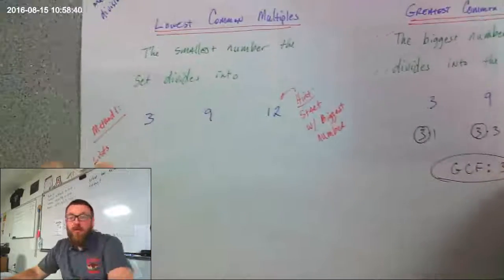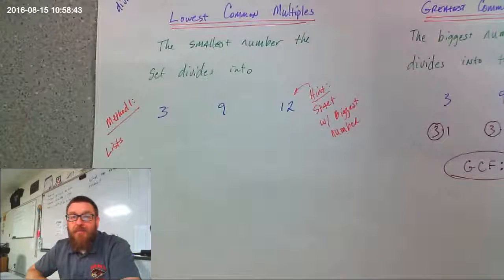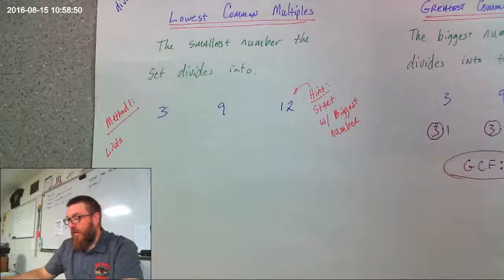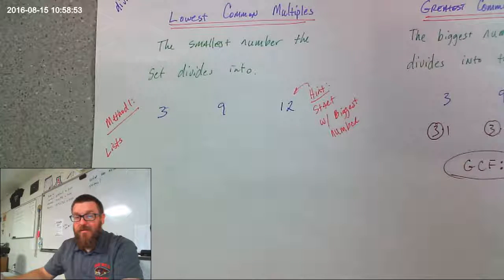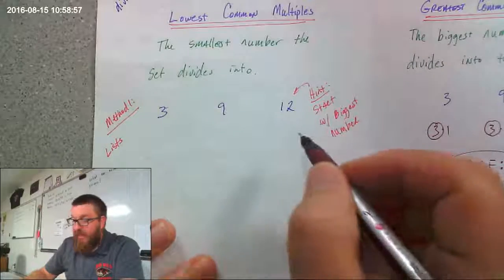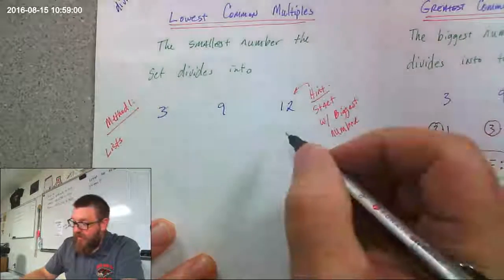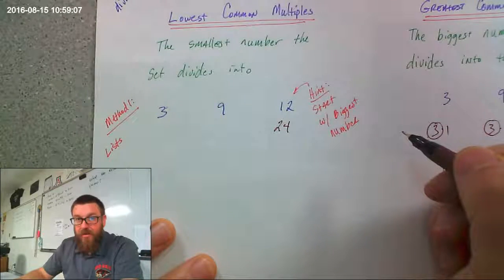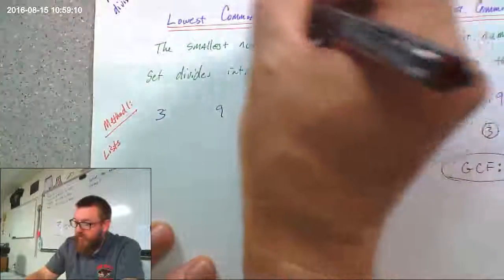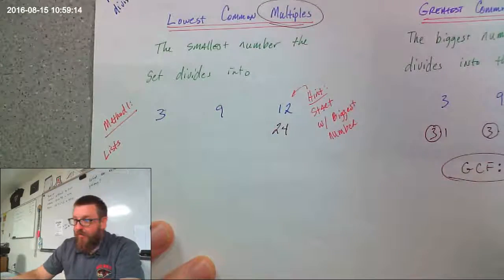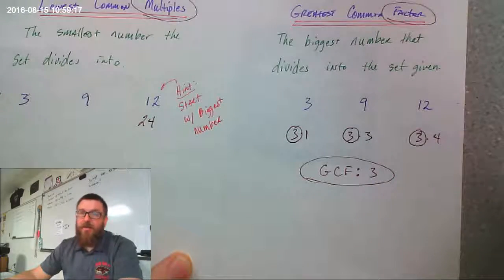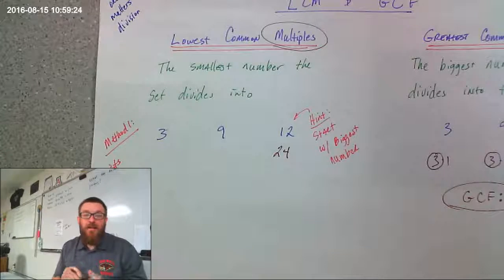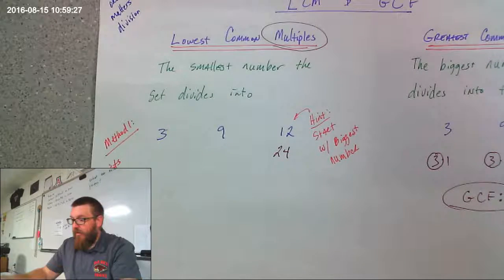Now, same set of numbers — let's talk about the lowest common multiple. Lowest common multiple is asking: what's the smallest number that all of these divide into? The simplest way to figure this out is by making a list of the multiples of these numbers. We're looking for the lowest common multiple, so we make a list of multiples. For greatest common factor, we made a list of factors and looked for the biggest factor they had in common. Here we make a list of multiples and find the smallest number that's a multiple of all the numbers on our list.